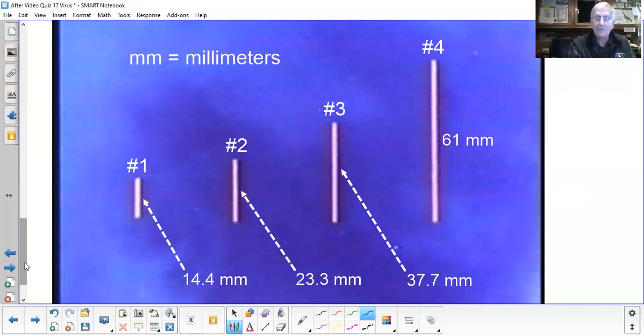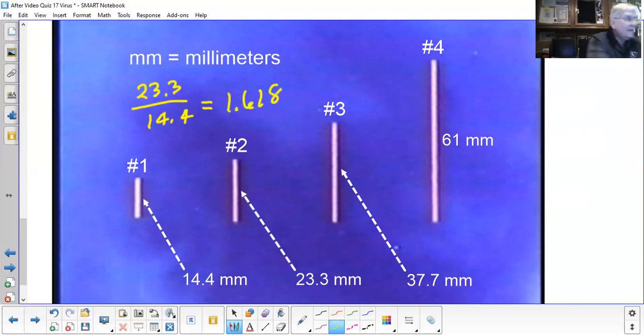Well to check it out, I have to divide these. Let's take 23. Let me change my color here for my writing so it's in yellow so that hopefully you can see it better. I'm going to take 23.3 and divide it by 14.4. So if you do that, if you take 23.3 and divide it by 14.4 on your calculator. Excuse me, 23.3 divided by 14.4, oh yes, 1.618055. Well, that's pretty close. It's 1.618, so it's pretty close to being golden sections.